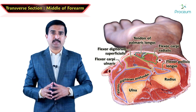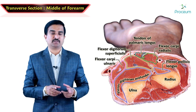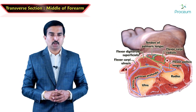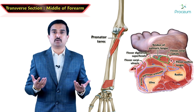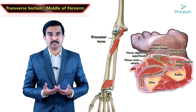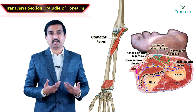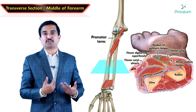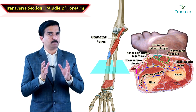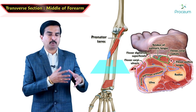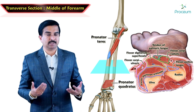The pronator quadratus is not seen because it is present on the distal aspect. The pronator teres is also not seen because it is a superficial muscle whose insertion lies above the level of this section. Therefore, the two important muscles — pronator teres and pronator quadratus — cannot be seen in this picture.